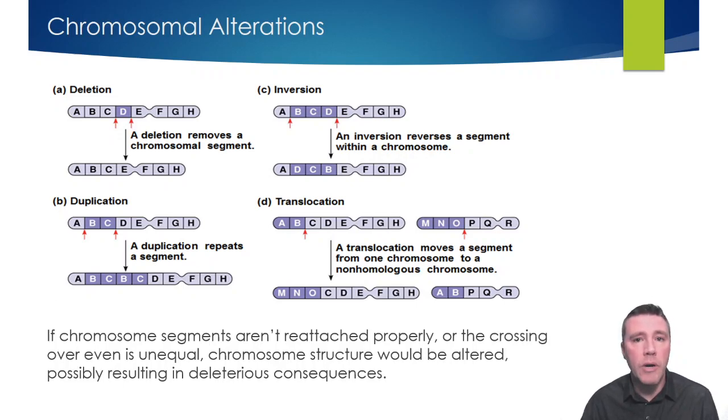An inversion is a rearrangement in which a segment of a chromosome is reversed end-to-end. These may not cause abnormalities, as long as the rearrangement occurs in both chromosomes and doesn't result in extra or missing DNA.